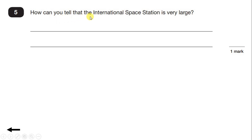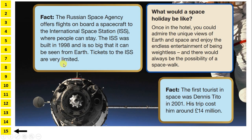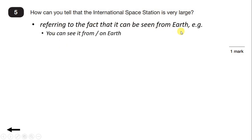Question 5: How can you tell that the International Space Station is very large? The only section we haven't read mentions the ISS: 'The ISS was built in 1998 and it is so big that it can be seen from Earth.' We get the mark for referring to the fact that it can be seen from Earth.